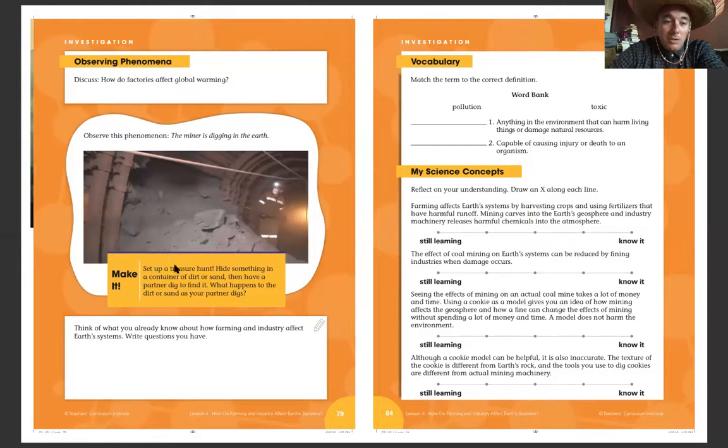Set up a treasure hunt. You don't have to do that. It says think of what you already know about how farming and industry—so industry is like factories pretty much, and like cutting down trees and things like that—affect Earth's systems. Write your questions that you have here. So this is questions.